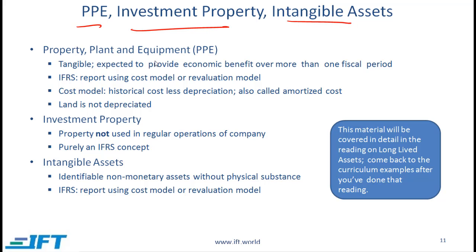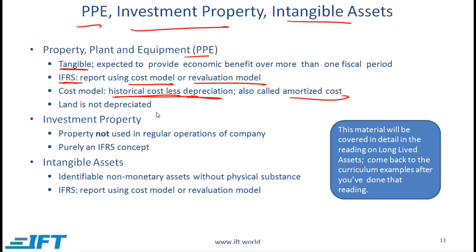Property, plant, and equipment are obviously tangible. It is expected that this asset will provide an economic benefit over more than one fiscal period. In terms of measurement basis, IFRS says we can use the cost model or revaluation model. The cost model is straightforward: we report property, plant, and equipment at historical cost less depreciation. That number — historical cost less depreciation — is also called amortized cost.